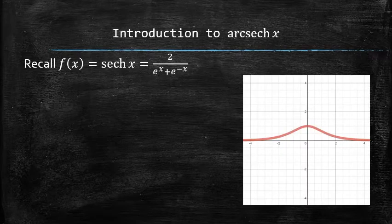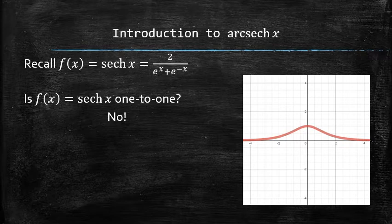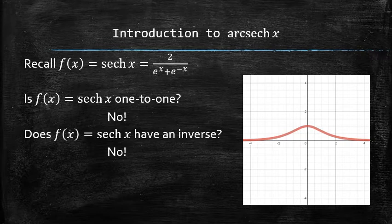And let's answer the following questions. Is this function one-to-one? The answer is no, because it doesn't pass the horizontal line test. Does this function have an inverse? The answer is also no, because only one-to-one functions have inverse functions.